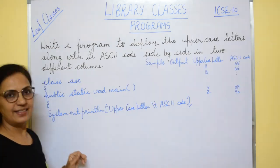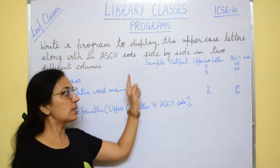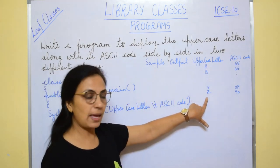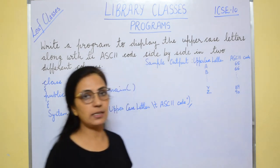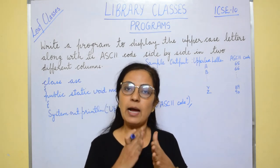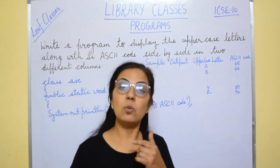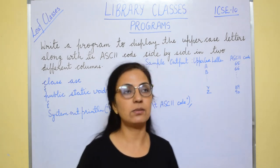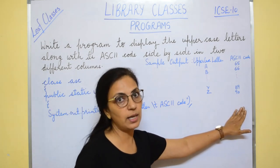Let's move to the next question: write a program to display the uppercase letters and their ASCII codes side by side in two columns. The sample output shows uppercase letters A, B, C... up to Z with their ASCII codes — A is 65, B is 66, Y is 89, Z is 90. We have a total of 26 letters from A to Z. We are not going to write 26 print statements. Since we need to repeat the process, we will use a looping construct.